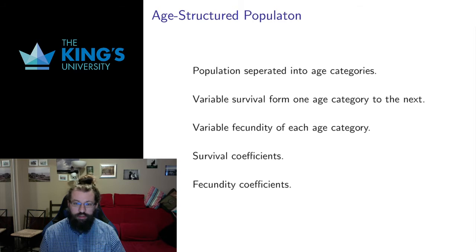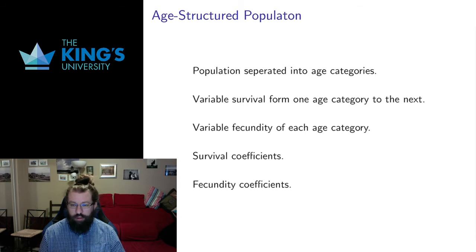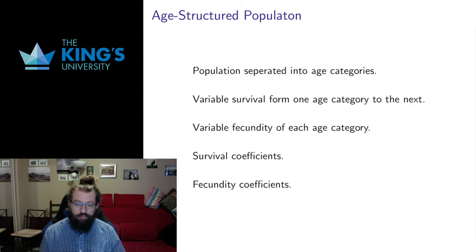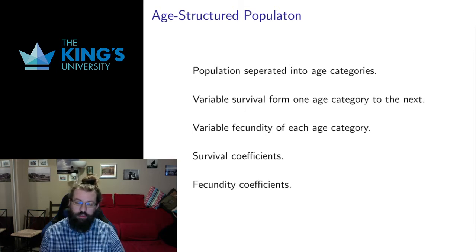Whatever the separation is, you've got a population separated into age categories, and you have variable survival from one age category to the next. For a small mammal with four age categories, surviving to your first, second, or third year are all different behaviors. It can be easier or harder to survive the first year than the second year, so I can have different survival rates from one age category to the next.